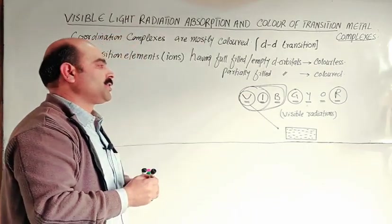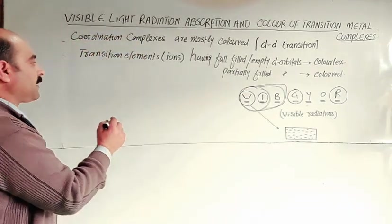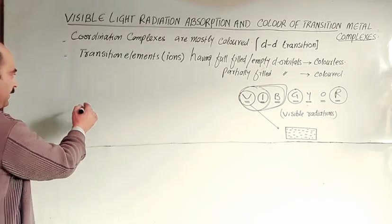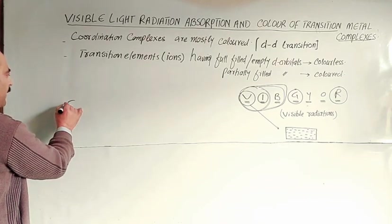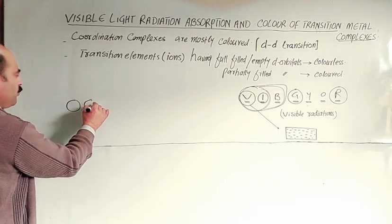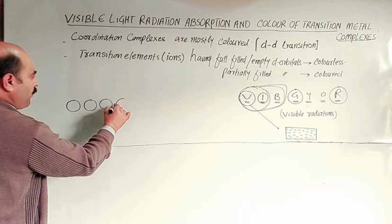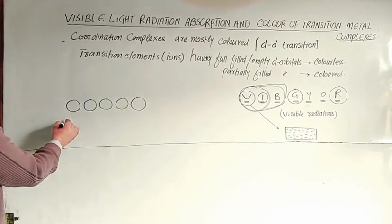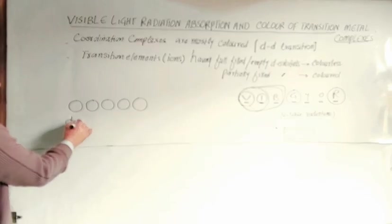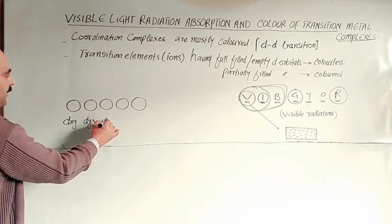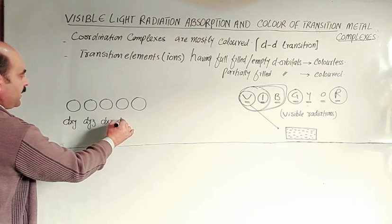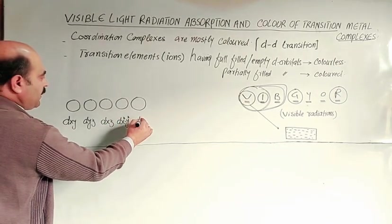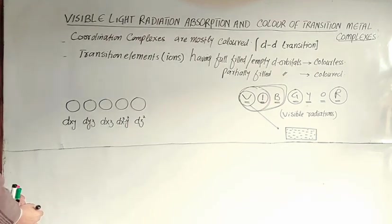D-orbital, d sub-shell, basically has five orbitals: one, two, three, four, five. These are DXY, DYZ, DXZ, DX square minus Y square, and DZ square.